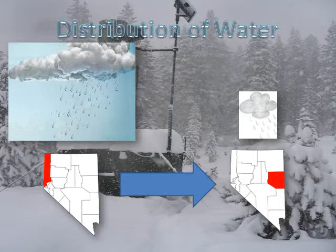Some believe that cloud seeding steals rainfall from someone else — specifically, won't nearby areas be robbed of rain because of seeding? That doesn't seem to be the case, as water vapor is always present in the atmosphere. Several studies have also suggested that areas downwind of seeding sites have experienced increased precipitation.